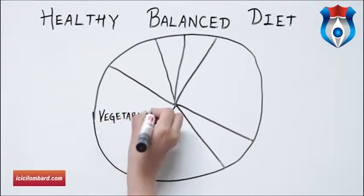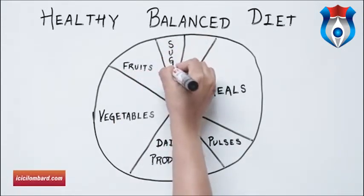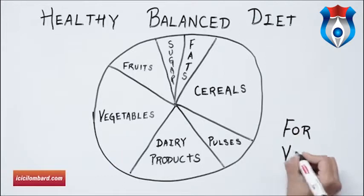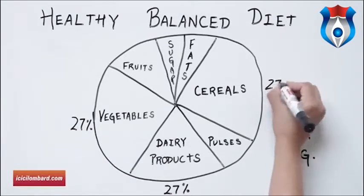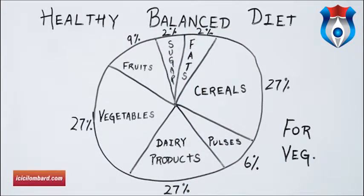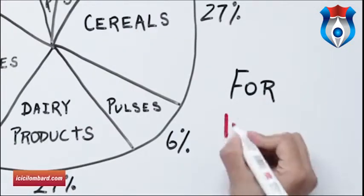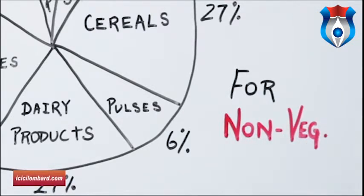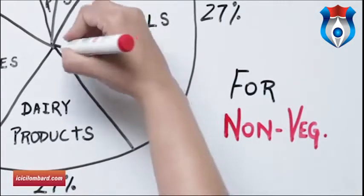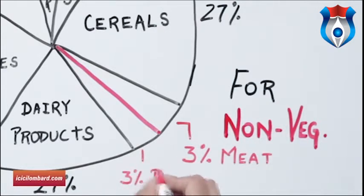A minimal amount of fat content is essential — try clarified butter or spray-on olive oil. For vegetarians, dairy products, cereals and vegetables fill 27% each of daily food intake. Fruits should be approximately 9%, pulses at 6%, and sugar and fat at 2% each. For non-vegetarians, the mix is similar — reduce pulses intake by 3% and replace with white meats like chicken or fish, which still maintain adequate protein intake.